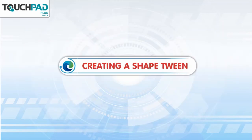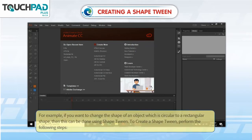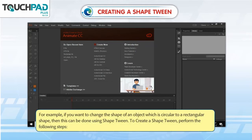Creating a Shape Tween. Shape Tween is a technique which smoothly morphs one shape into another. Any kind of animation that requires the stroke or the fill of a shape to change — for example, animation of clouds, water or fire — is a perfect example of Shape Tween. For example, if you want to change the shape of an object from circular to a rectangular shape, this can be done using Shape Tween.